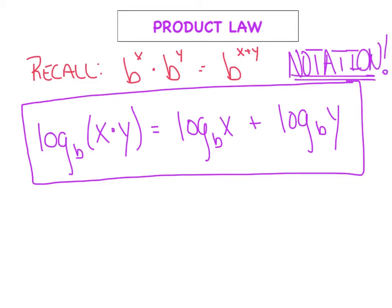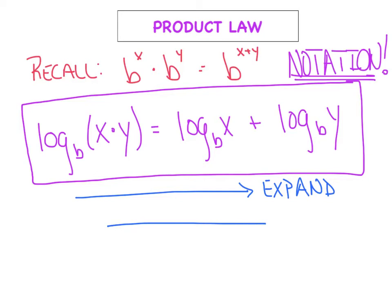As far as the terminology we use, if we go from left to right, that's called expanding — we're expanding the log. But if we go from right to left, then we're doing what's called condensing — we're condensing the log.